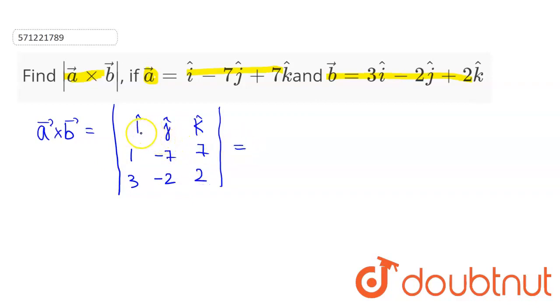Now, expanding the determinant along row 1. This will be i cap times (minus 7 times 2, that is minus 14, minus 7 times minus 2, that will be positive 14), minus j cap times (1 times 2 is 2, minus 7 times 3, that is 21), plus k cap...